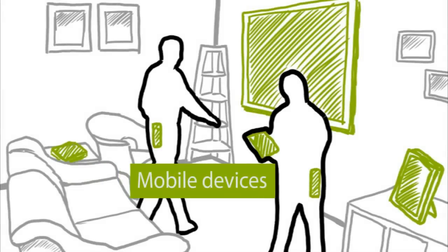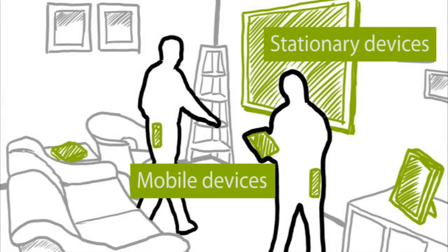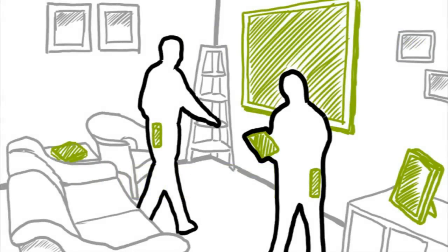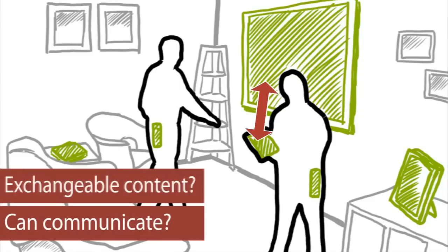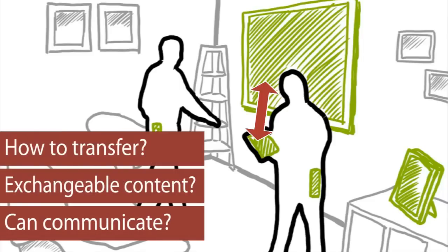Using mobile and stationary devices becomes increasingly commonplace for people's interaction with digital information. Yet, using multiple devices in concert remains difficult. People often do not know which devices can communicate, what exchangeable information they contain, or how information can be transferred.